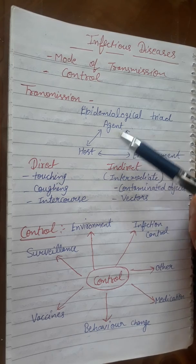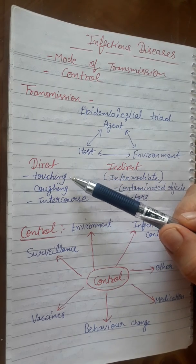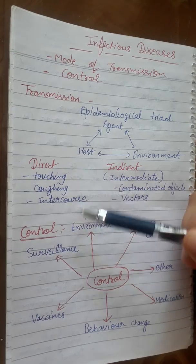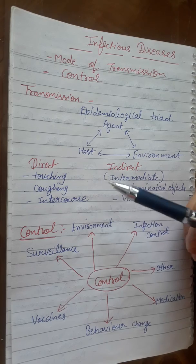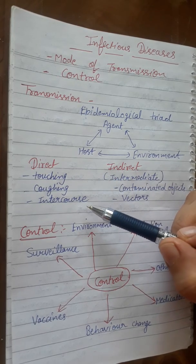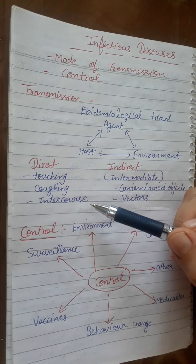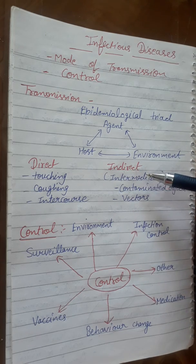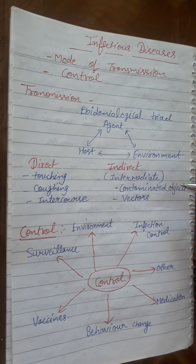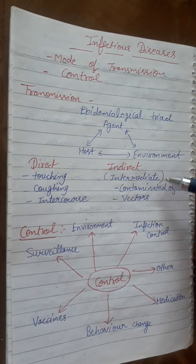There are many modes of transmission. Indirect transmission can occur through touching, coughing — if someone sneezes or coughs, it can transmit through the air via the respiratory route, and through sexual intercourse, like HIV and many sexually transmitted diseases. Another indirect mode includes contaminated objects, also called fomites — if someone touches a surface, another person can touch that surface and that is how infectious diseases can transmit.